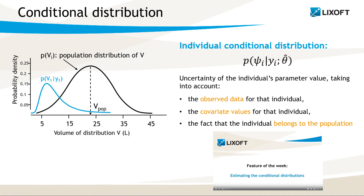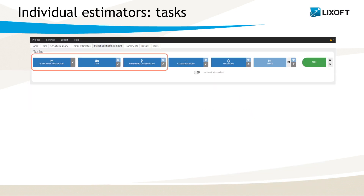If you want to know more about this procedure, I recommend watching feature of the WIC number 86. In Monolix, there are two tasks that estimate the individual parameters: the EBE task and the conditional distribution task.